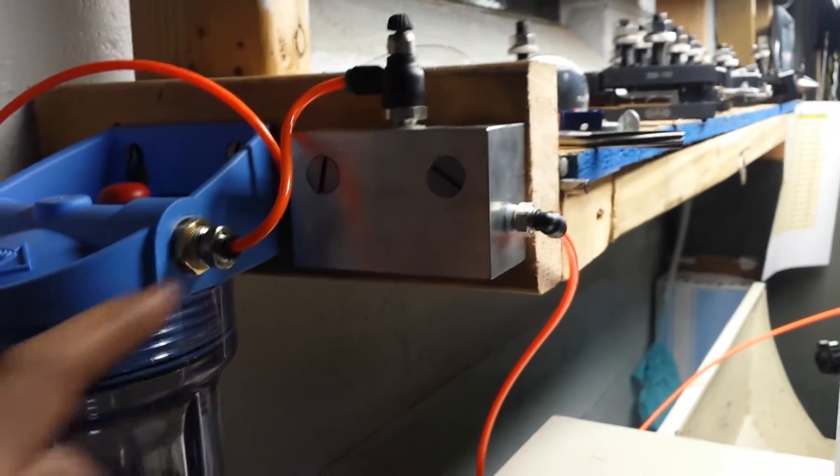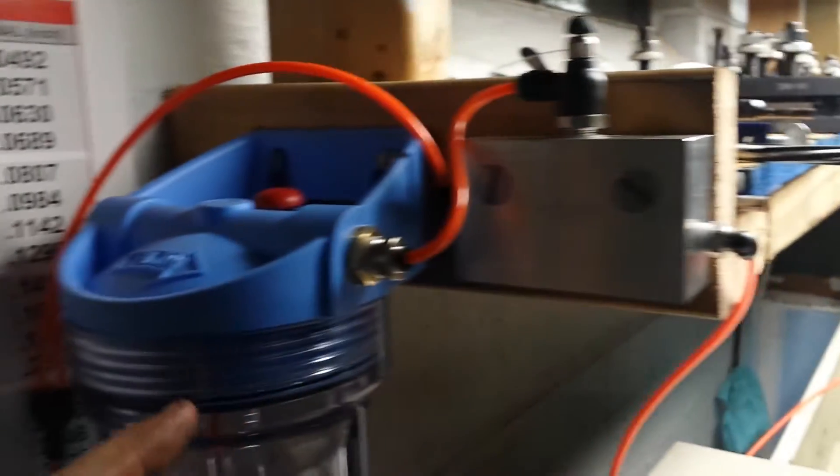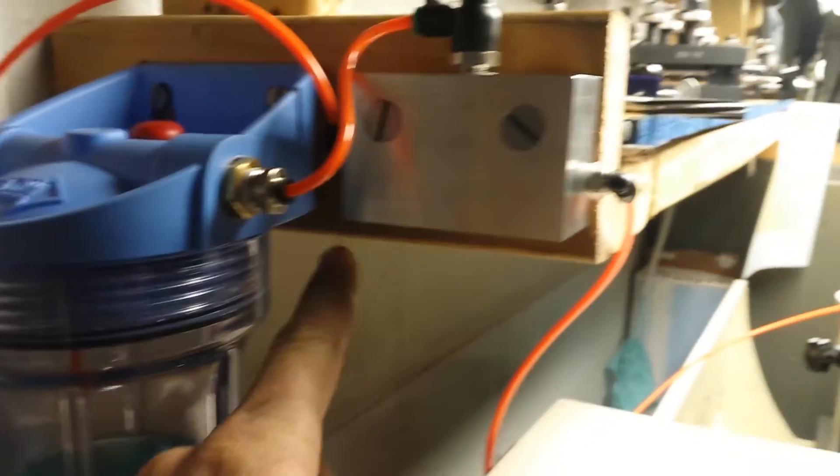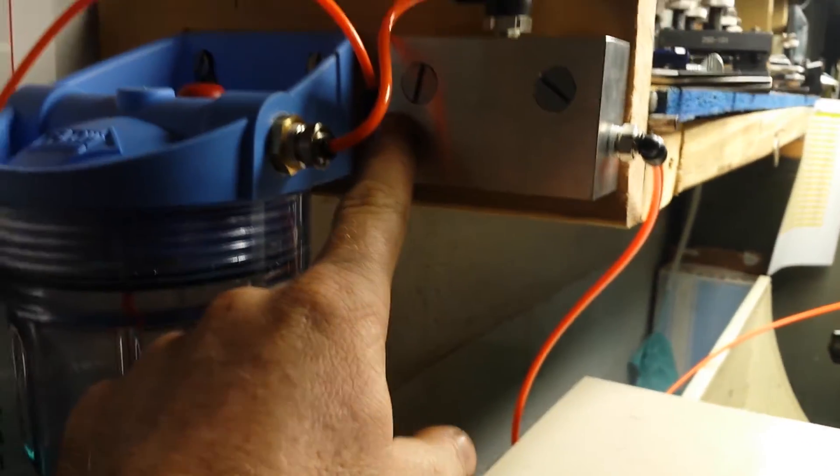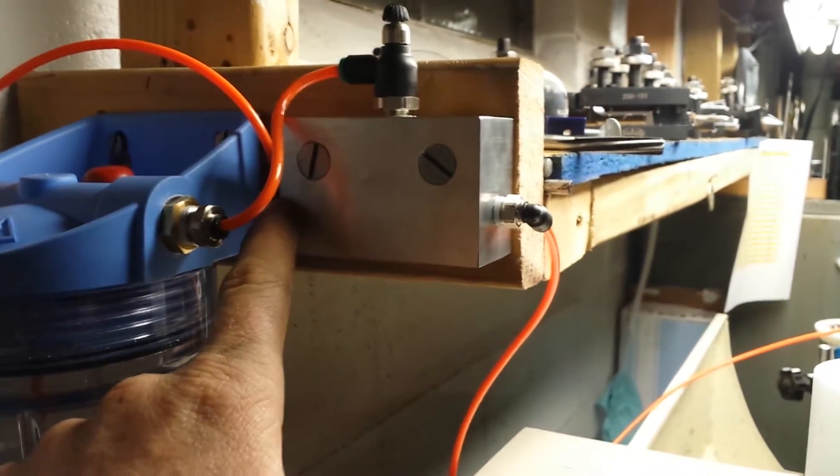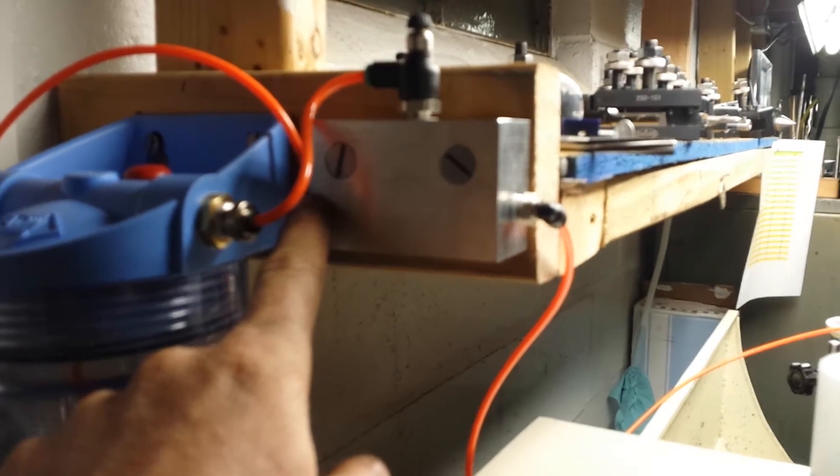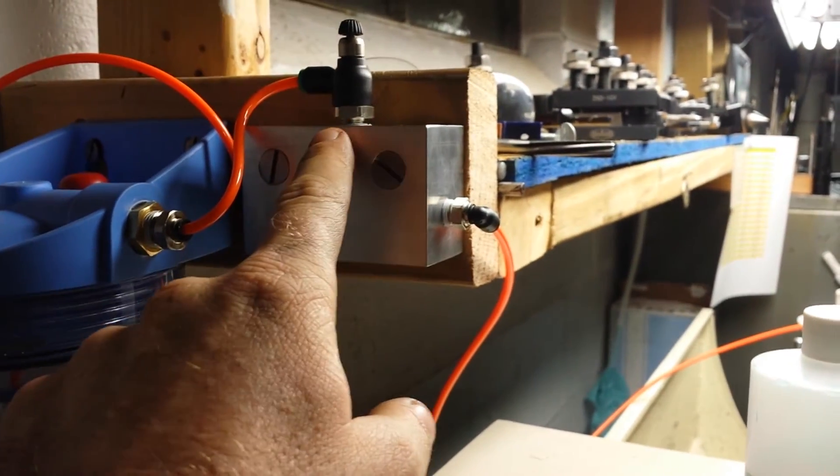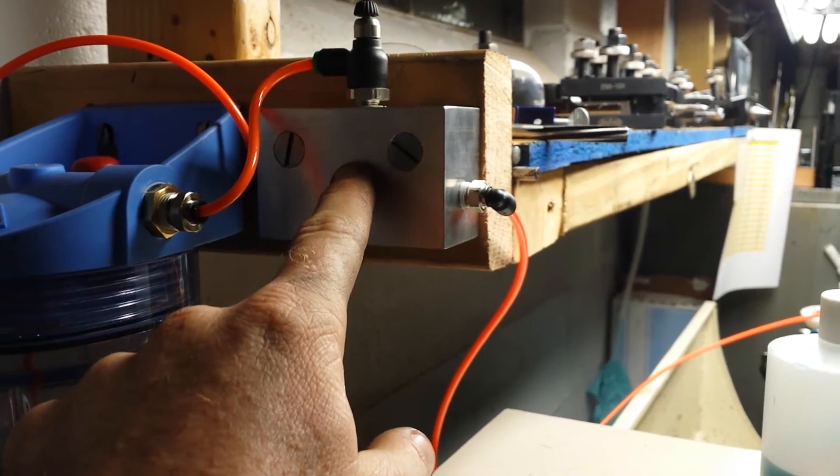So basically you got the liquid coming up here, the coolant, and the air coming up over into here. And this mixing block is real simple. You can find the plans online, mine I deviated a little bit. It's basically a 5/64ths hole all the way through, and then a 1/16th hole for the liquid.